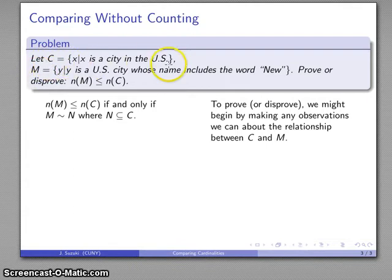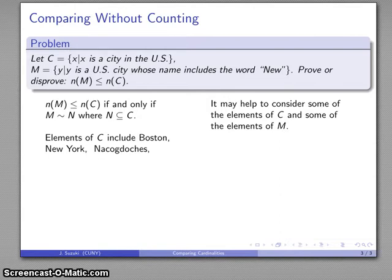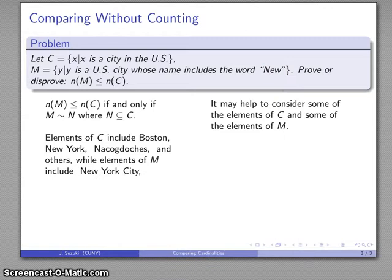And it's helpful to start out by thinking about well what are things that are in these sets. So let's take a look at that. So let's see elements of C. Well these are cities in the United States and so let me think. These are places like, I don't know, Boston, New York City, Nacogdoches, and a bunch of other places. And our set M, these are U.S. cities whose name includes the word new. And these are places like well New York City, New Windsor, New Rochelle, and a whole bunch of other places. And so this helps us get an idea of what these two sets look like.